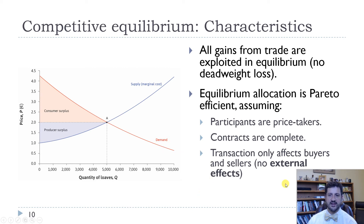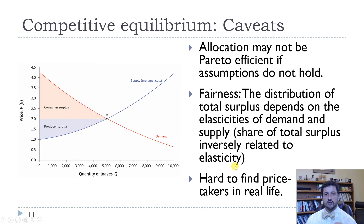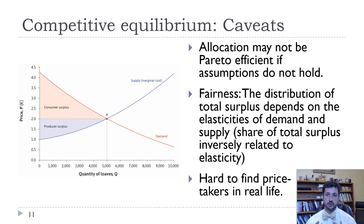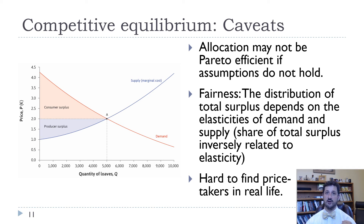It's also important to think about the fact that we're assuming there are no externalities — no external effects like pollution that would create costs on people other than the buyers and sellers. This is a nice model with a lot of useful features, but it's only as good as its assumptions — just like all models. And if those assumptions don't hold, then the allocation may not be Pareto efficient. For example, if we have negative externalities — if all these bakers are producing a lot of pollution and putting it into the air or dumping it into the water — then our equilibrium outcome would not be Pareto efficient.